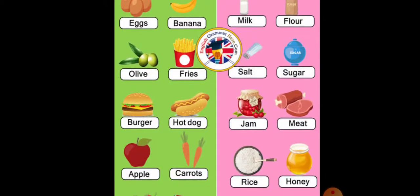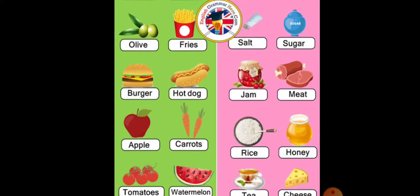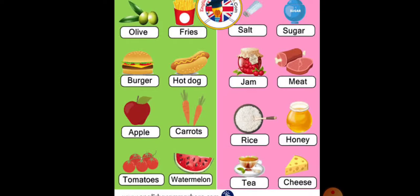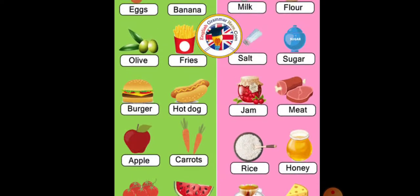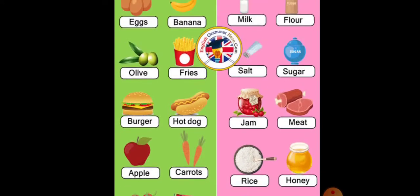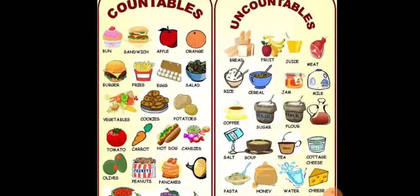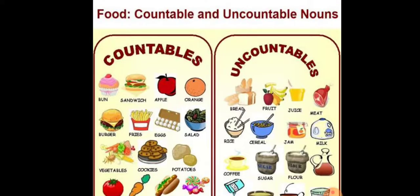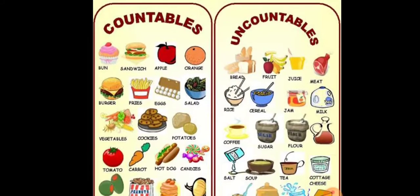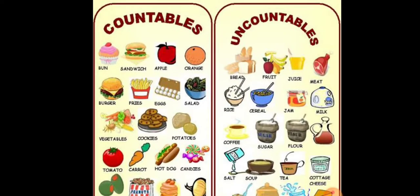Olive, fries, burgers, hot dog, apple, carrots, tomatoes, watermelon — countable. Salt, sugar, jam, meat, rice, honey, tea, cheese — uncountable nouns. These are the examples of uncountables. You can see and observe the picture. A noun that can be counted is a countable noun, and uncountable nouns are those that cannot be counted.